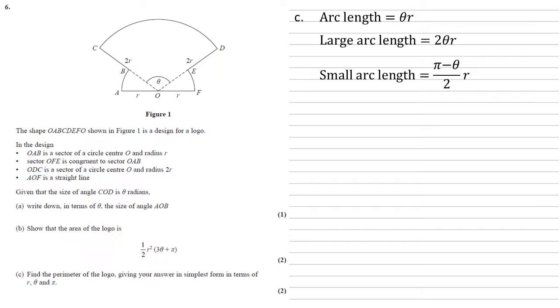We've also got the two small arcs AB and EF. Well, they're radius R and angle π minus theta over two. So timesing them together gives us π minus theta over two times by R.